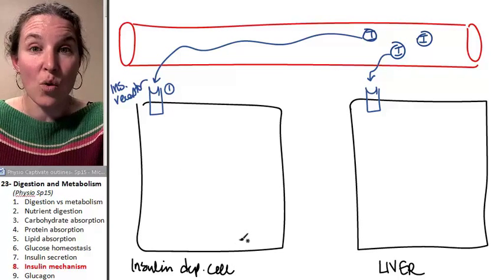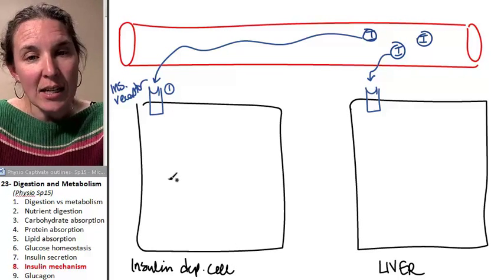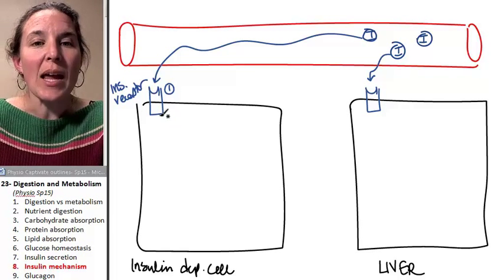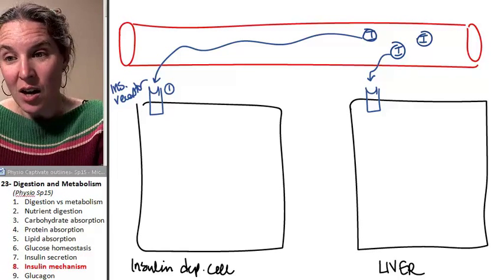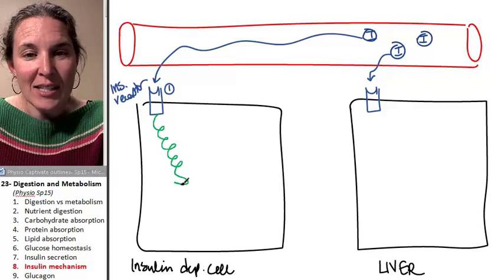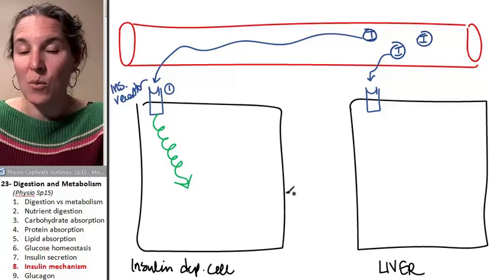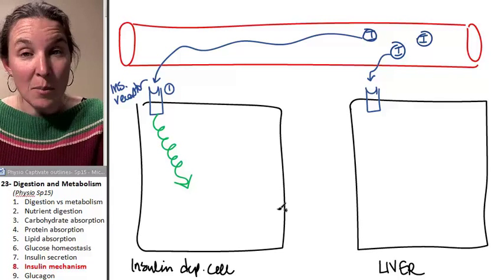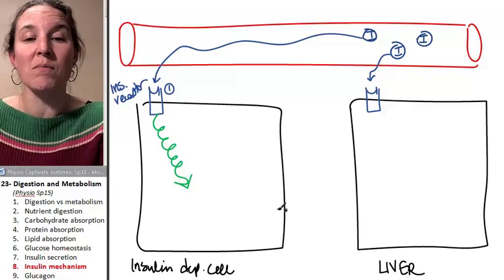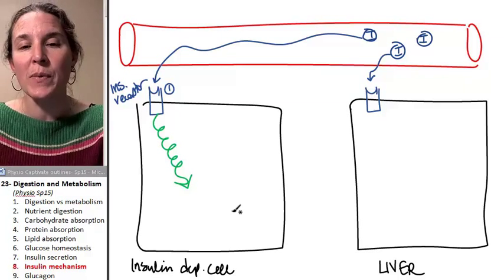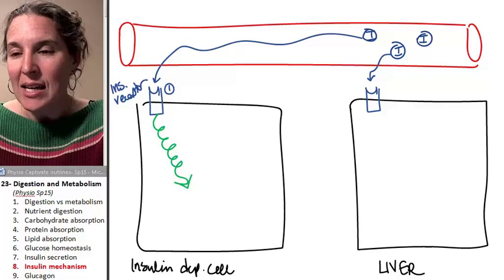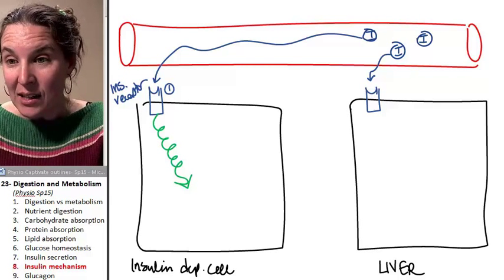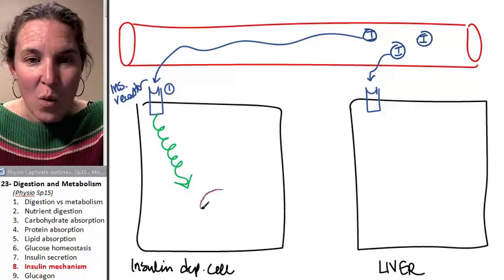Let's do the insulin dependent normal cell first. Insulin comes in and we are just going to have a second messenger cascade that will take place. Insulin is a peptide hormone. This is a common mechanism for a peptide hormone. So the second messenger cascade culminates in something that we've seen this before.